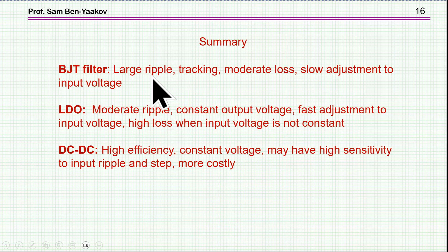So, what are the conclusions here? The BJT filter can handle large ripple. No problem with that. Of course, if the ripple is large, you have to increase a little bit the DC voltage across the transistor, meaning that there will be higher losses. It's a tracking type of a filter, that is, the voltage that the output is tracking after the input. It has a moderate loss. However, it has a slow adjustment to the input voltage changes, because there is this RC filter. So, if the voltage is changing, it will take a while for it to adjust. In some cases, this can be tolerated.